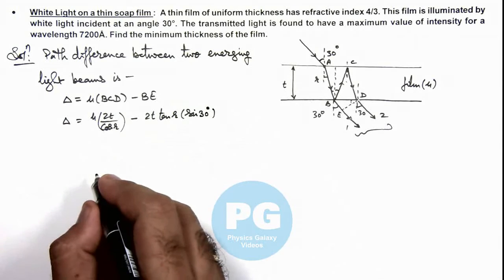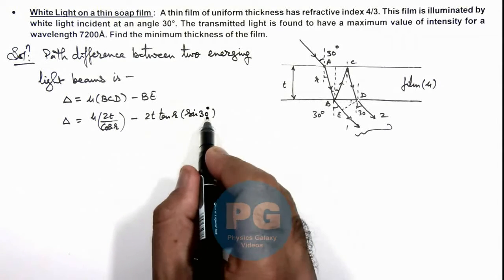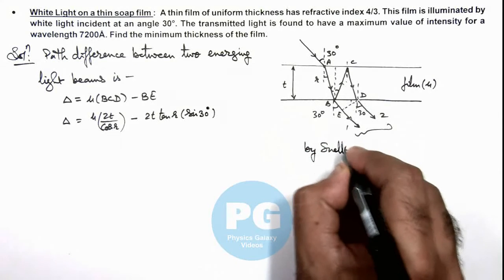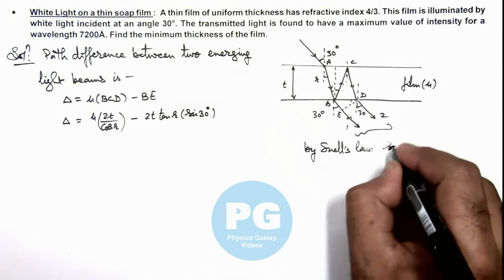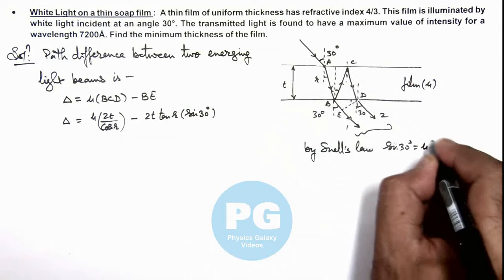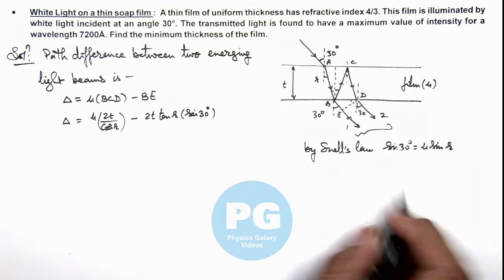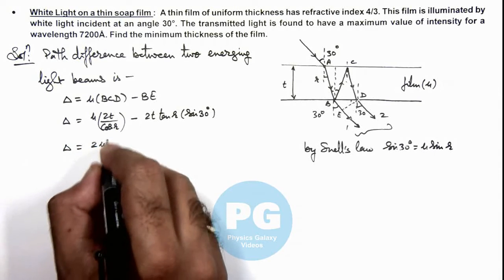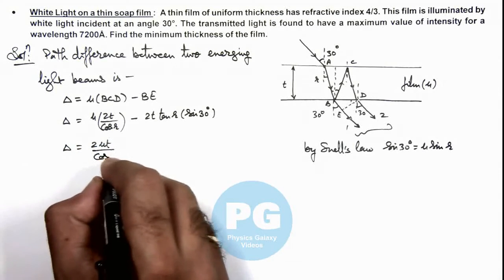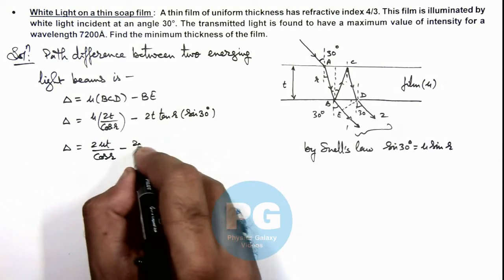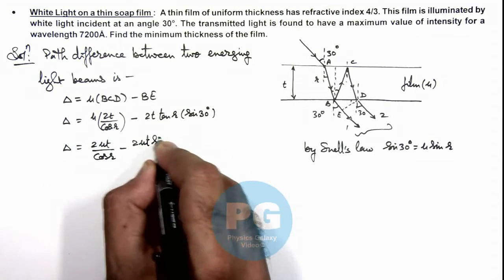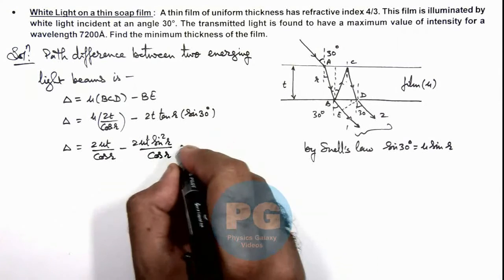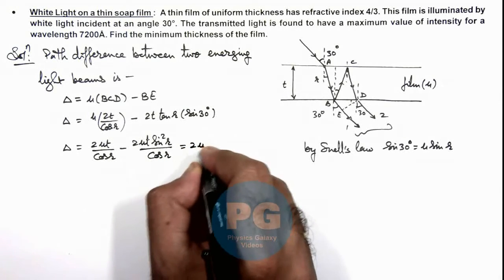And in this situation we can also substitute this sine 30 in terms of r, as here we can write by Snell's law, we use sine 30 degrees is equal to mu sine r. So if we substitute the value over here, you can see this becomes path difference. This path difference is 2 mu t upon cos r minus this also becomes 2 mu t sine squared r by cos r. And if we take this 2 mu t common, the result we are getting is 2 mu t cos r.